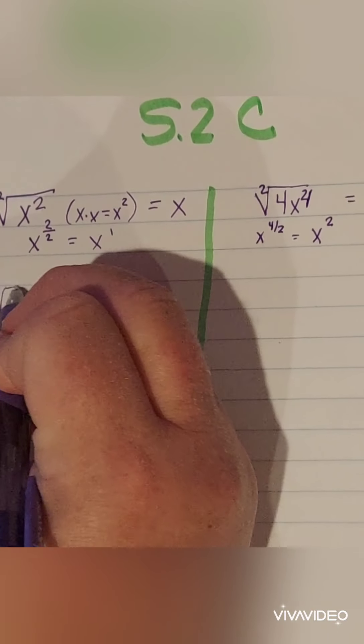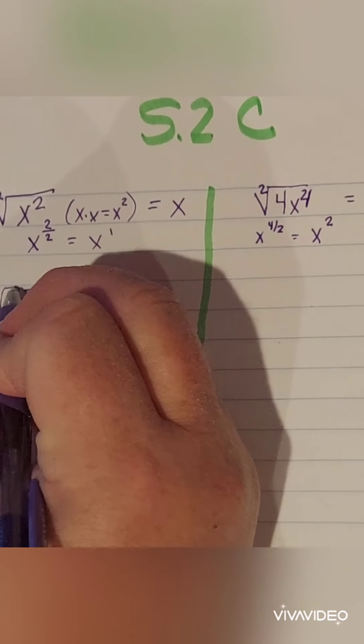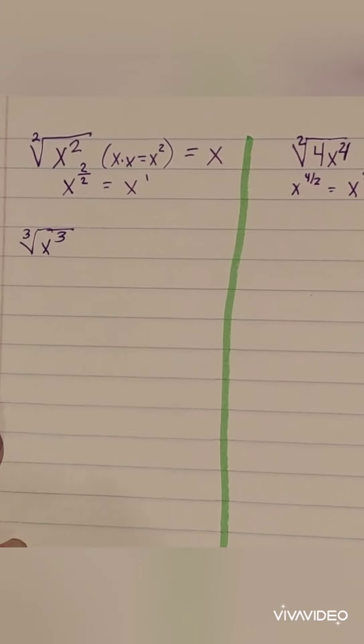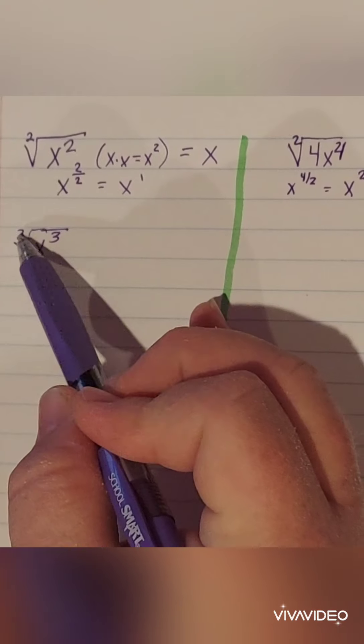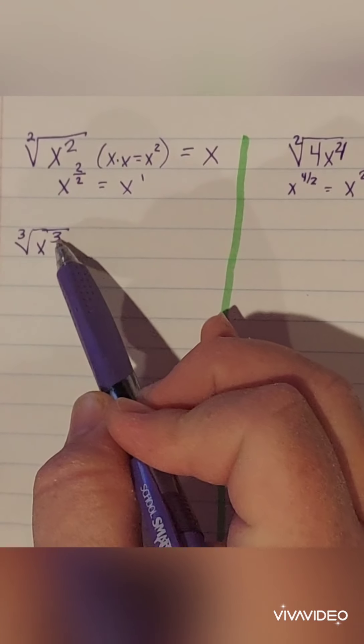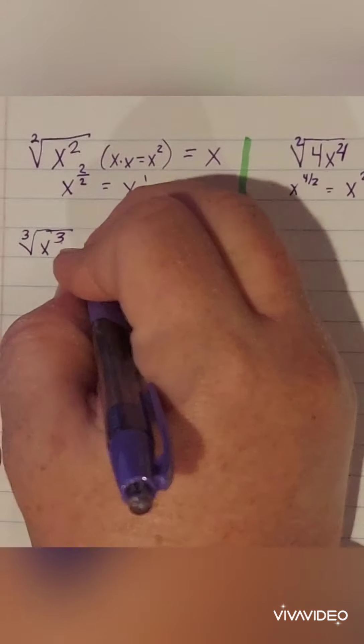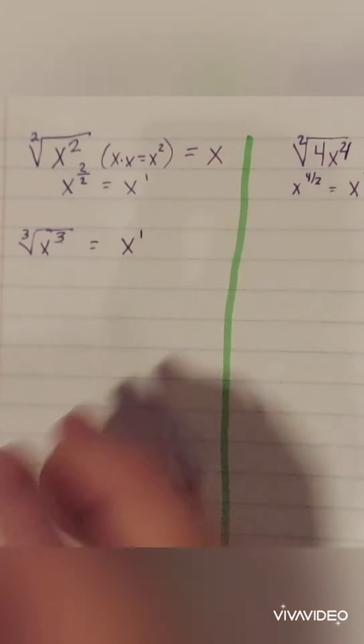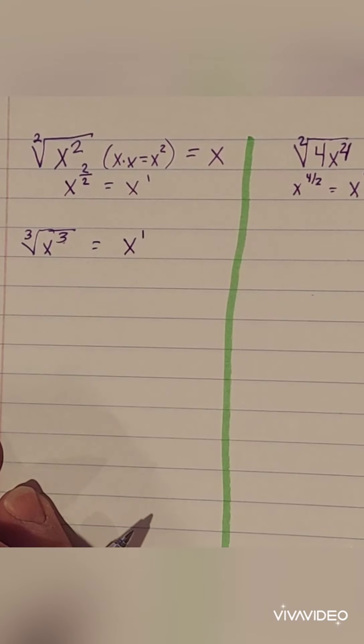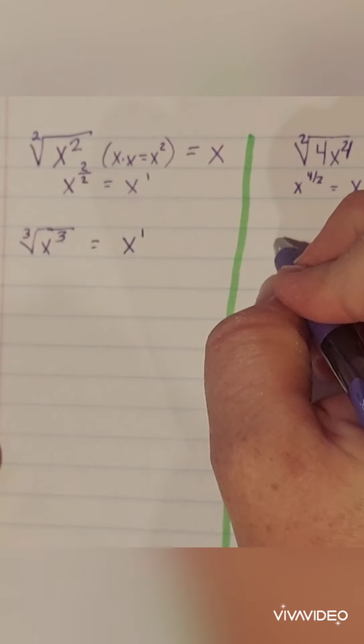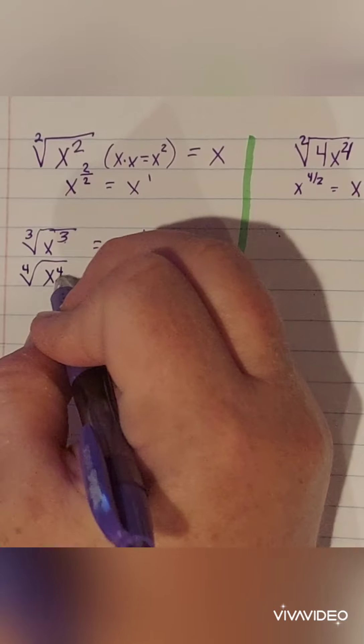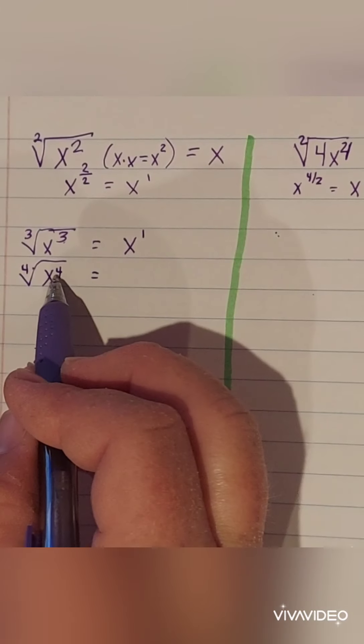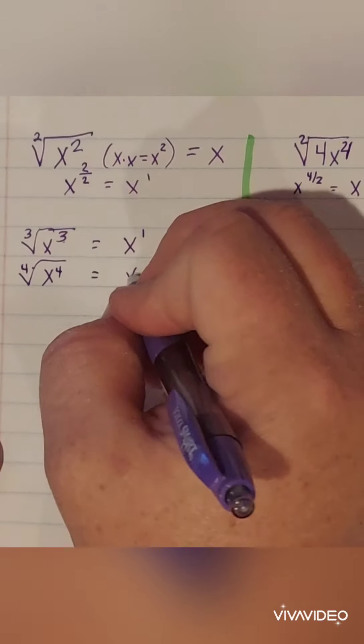All right. So let's see if you can apply this. Now let's do a third. Same thing. Let's see if we can apply a shortcut. This is three. So three goes into three how many times? Oh, yeah. Once. Done. All right. So let's try four. Four goes into four. Oh, yeah. Once.